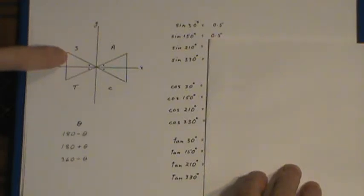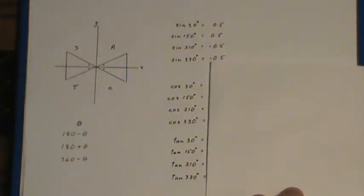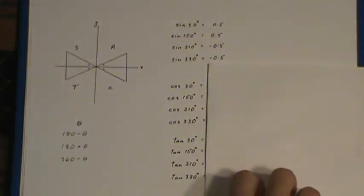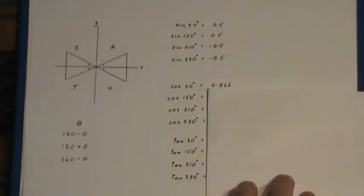But in the remaining two quadrants, again a 0.5, but the values are negative. The same thing with the cosine. If you take the cosine of 30, you can check these out on your calculator.